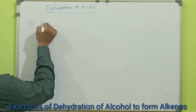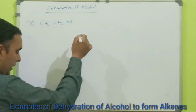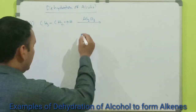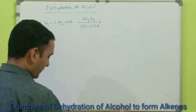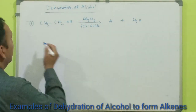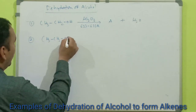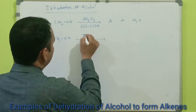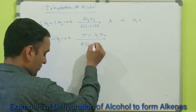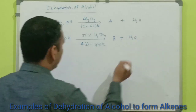The first reaction: CH₃CH₂OH treated with aluminum oxide (Al₂O₃) at 623 to 633 Kelvin — name the product plus water. The second reaction: CH₃CH₂OH treated with 95% sulfuric acid (H₂SO₄) at 433 to 443 Kelvin — name the product and water molecules.